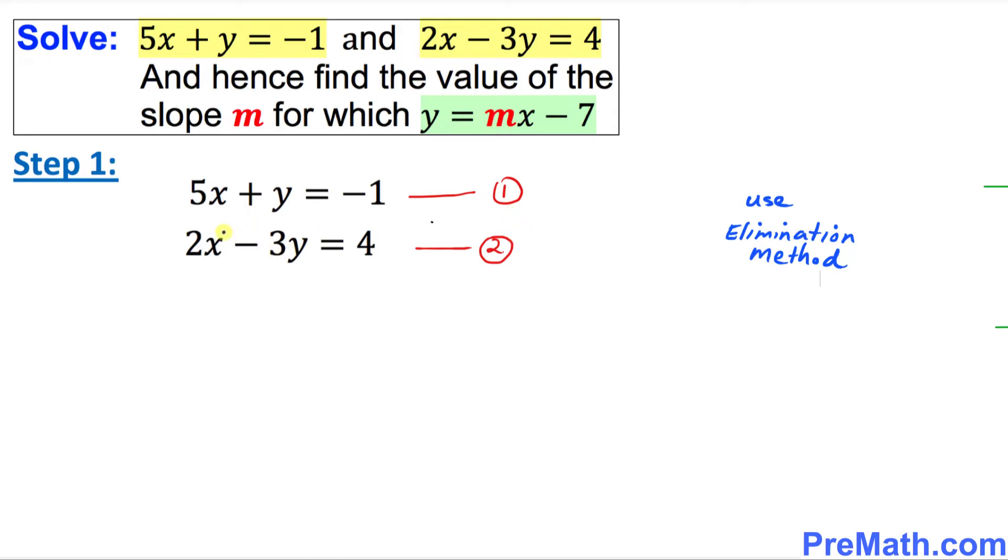Here is the next step. Since we are using elimination method, the best way is to multiply the top row, equation number one, by three, and then add these two equations.